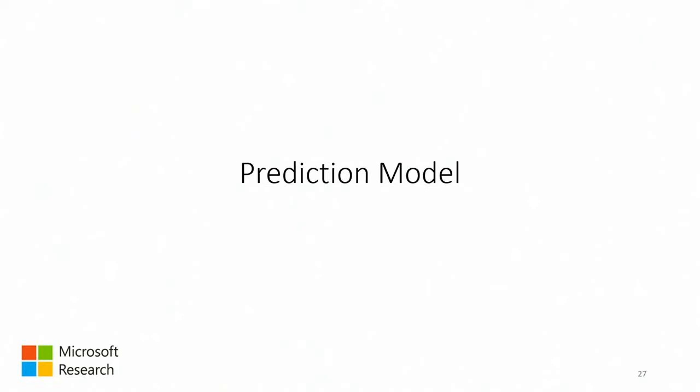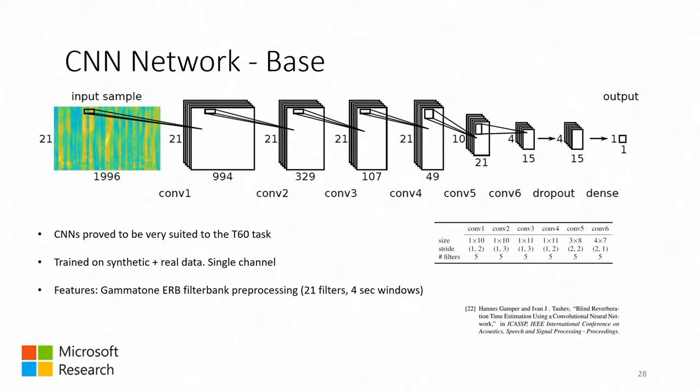For the prediction model, we started from what was already implemented for the T60 problem — from the paper by Hannes and Ivan, where a six-layer convolutional neural network followed by a dropout layer and fully connected layer produced improved results from the ACE challenge. We decided to start from there and work our way into modifications to see what yielded the best results. This was tailored for a gammatone ERB filterbank with 21 filters and four-second windows — which is also why we chose four-second windows, to be able to reuse this network easily.